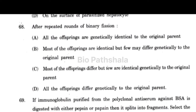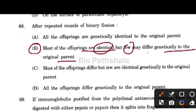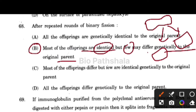Next question: after repeated rounds of binary fission, the correct option is option number B — most of the offspring will be identical, but a few may differ genetically from the original parent. As we know during binary fission the organism divides into two, but genetic distribution is not always exactly equal, so most offspring are identical but some variability can be observed.